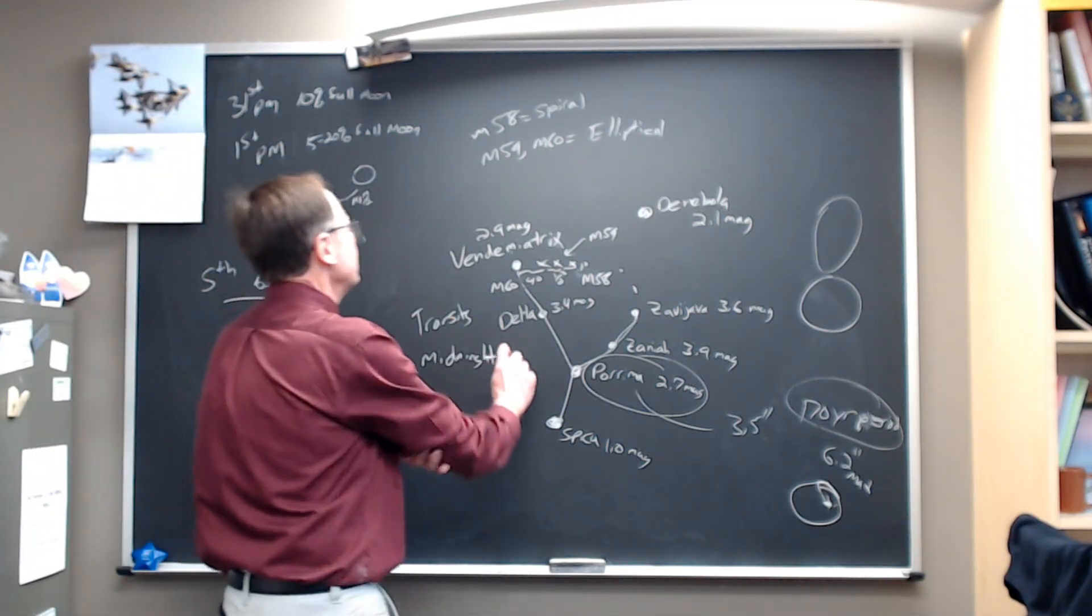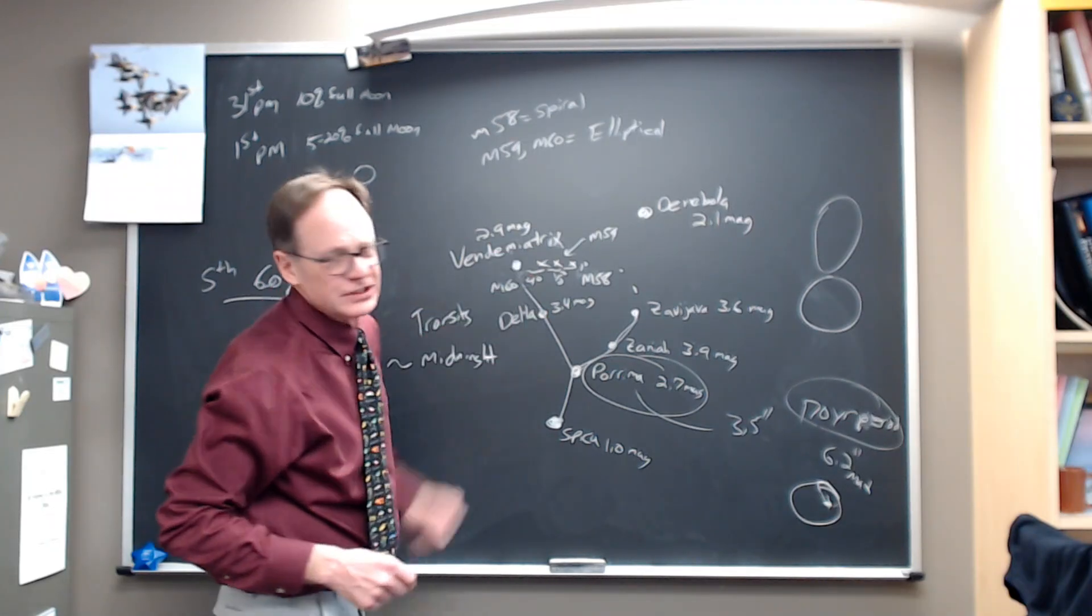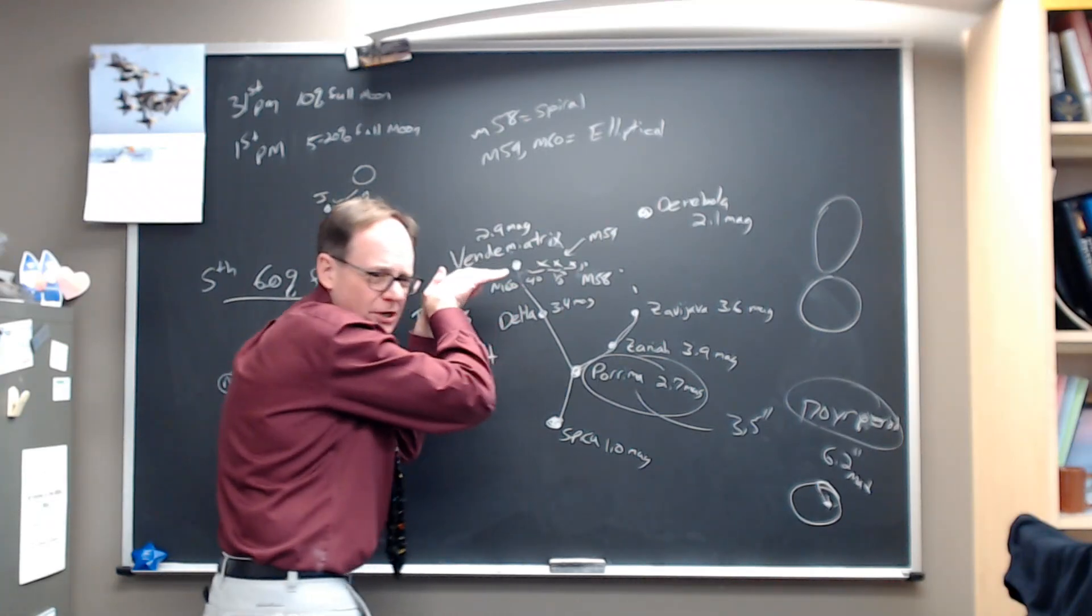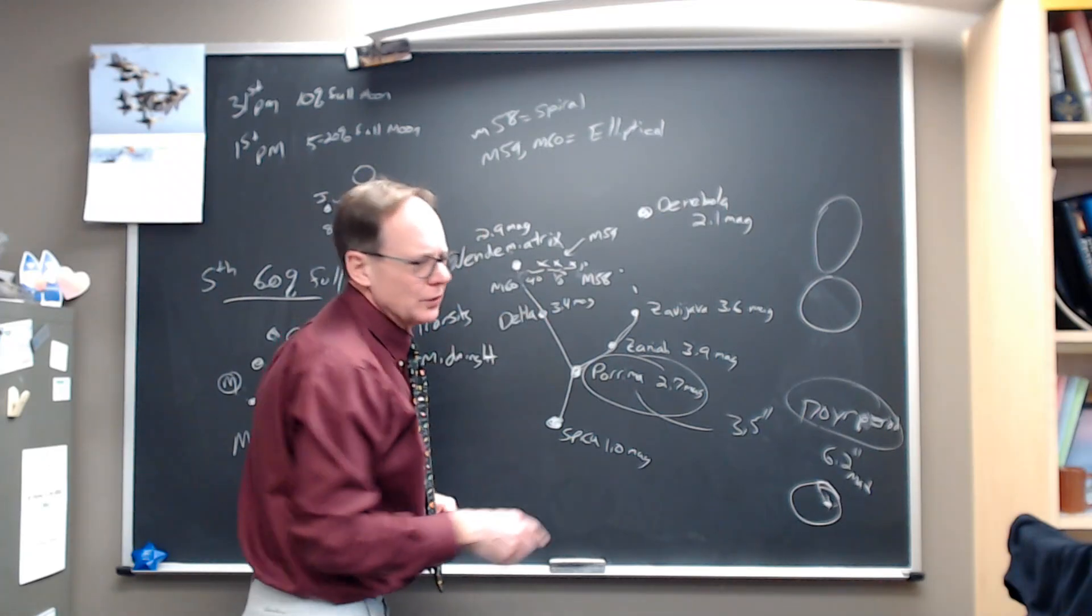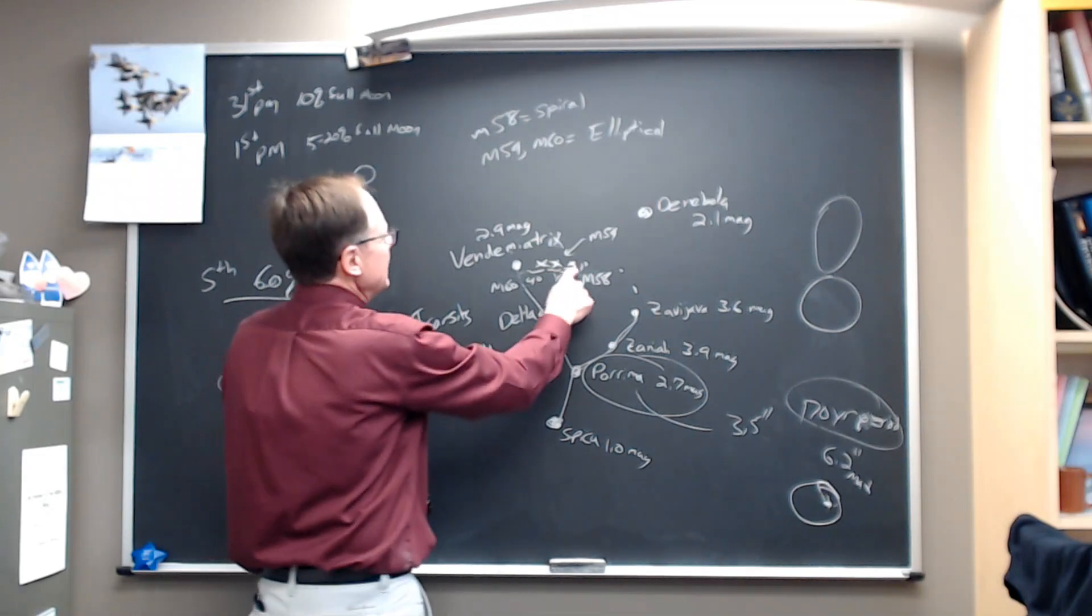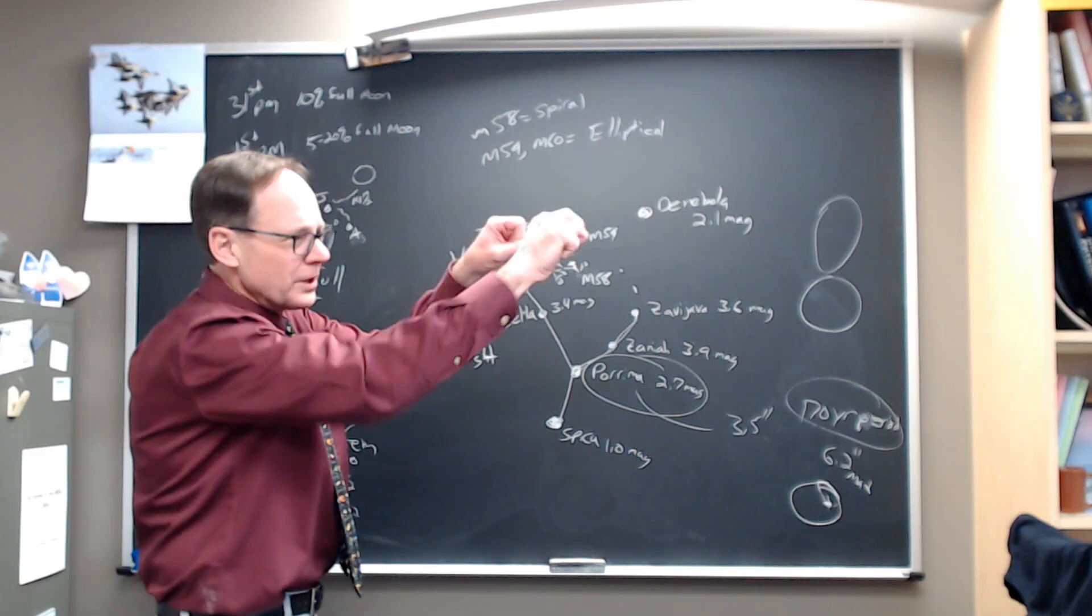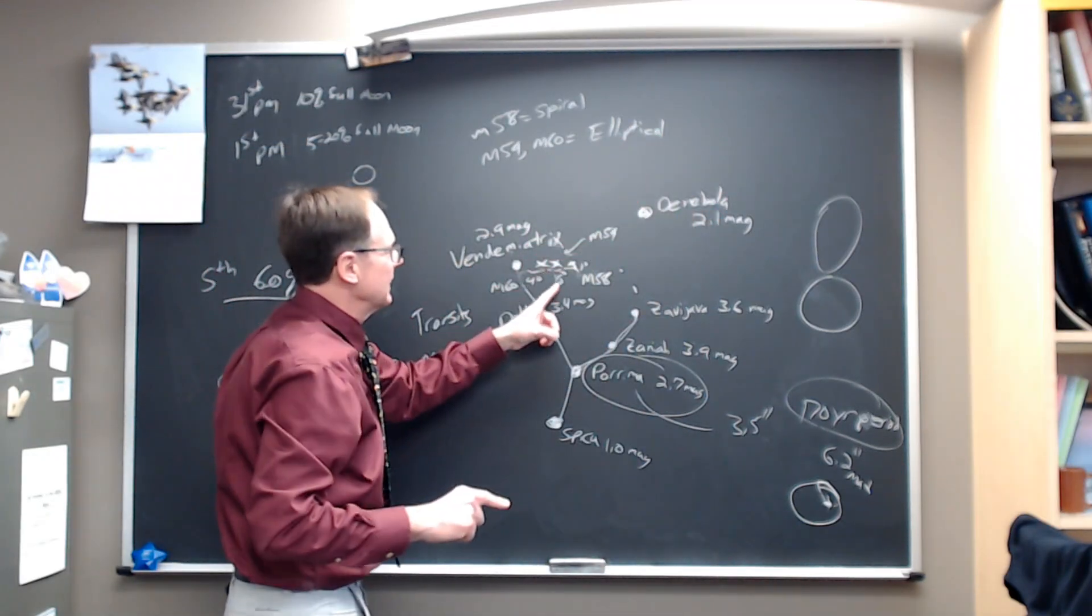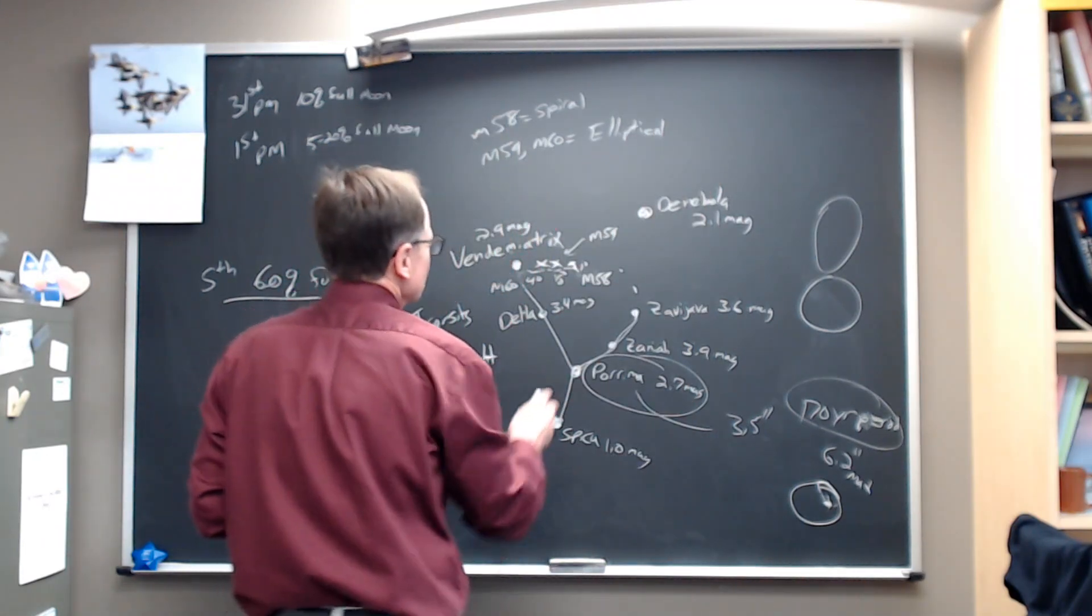Now, as we go back up here to Vendemiatrix, the star at the tip of the left edge of the wine cup of Virgo, the Y of Virgo, four degrees. Let's go more or less straight west, four degrees, and you're going to come to the first of a series of three galaxies. So you've got M58, M59, and M60. So about four degrees, then you go another half degree, half of the finger width at arm's length, and you've got M59, and then you've got M58, just a little over a degree further west from there. So these are great galaxies.